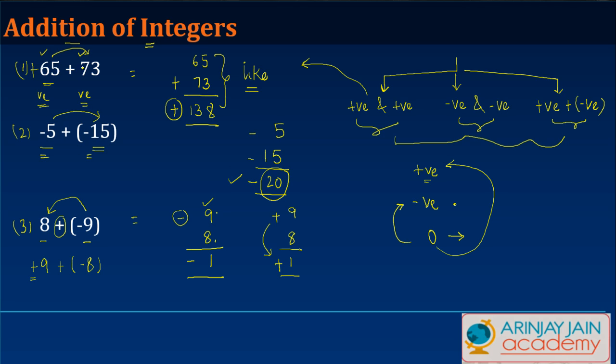As against this, when we add two integers with different sign, we just simply subtract the smaller one from the larger one. And the sign that the result gets is the one which is attached to the larger number.